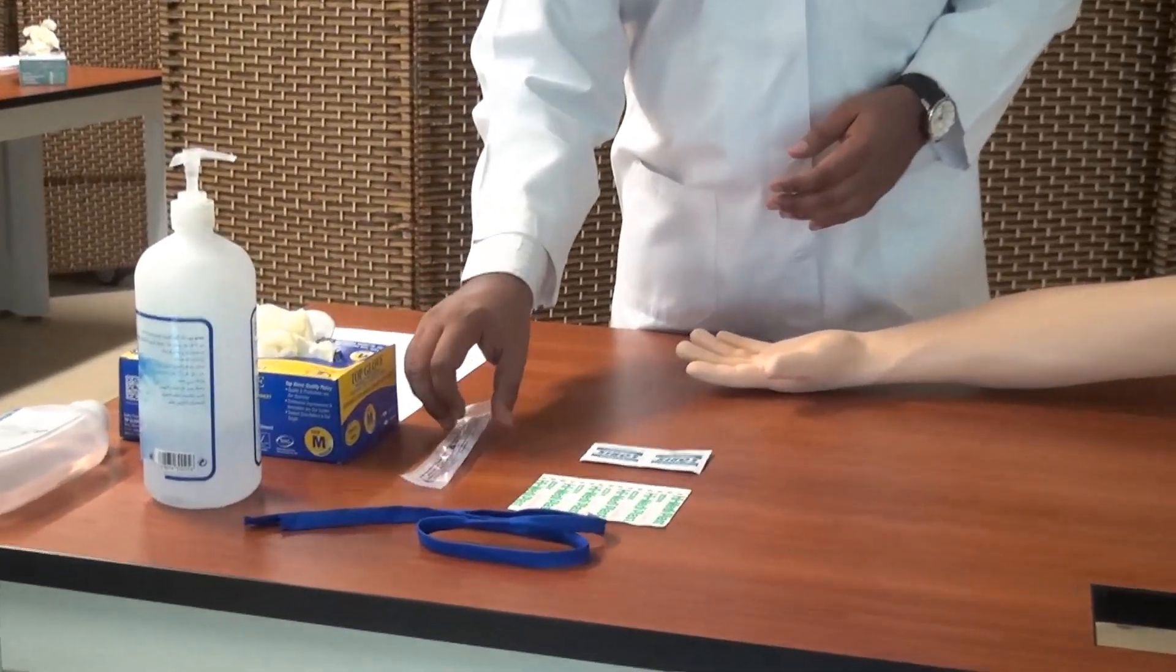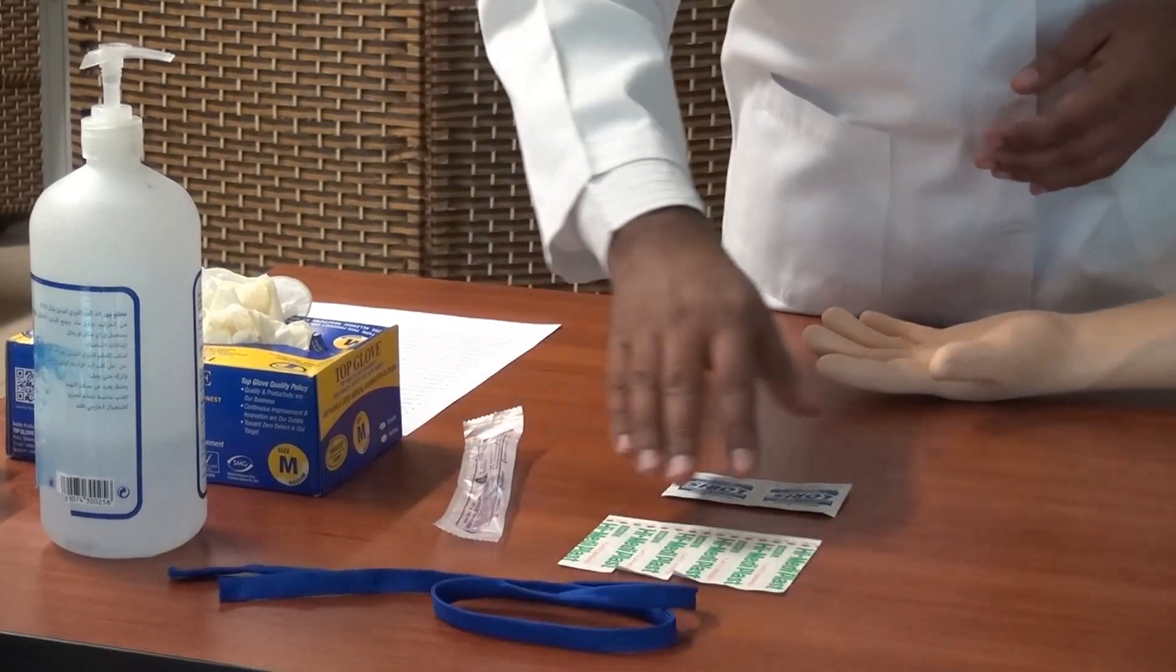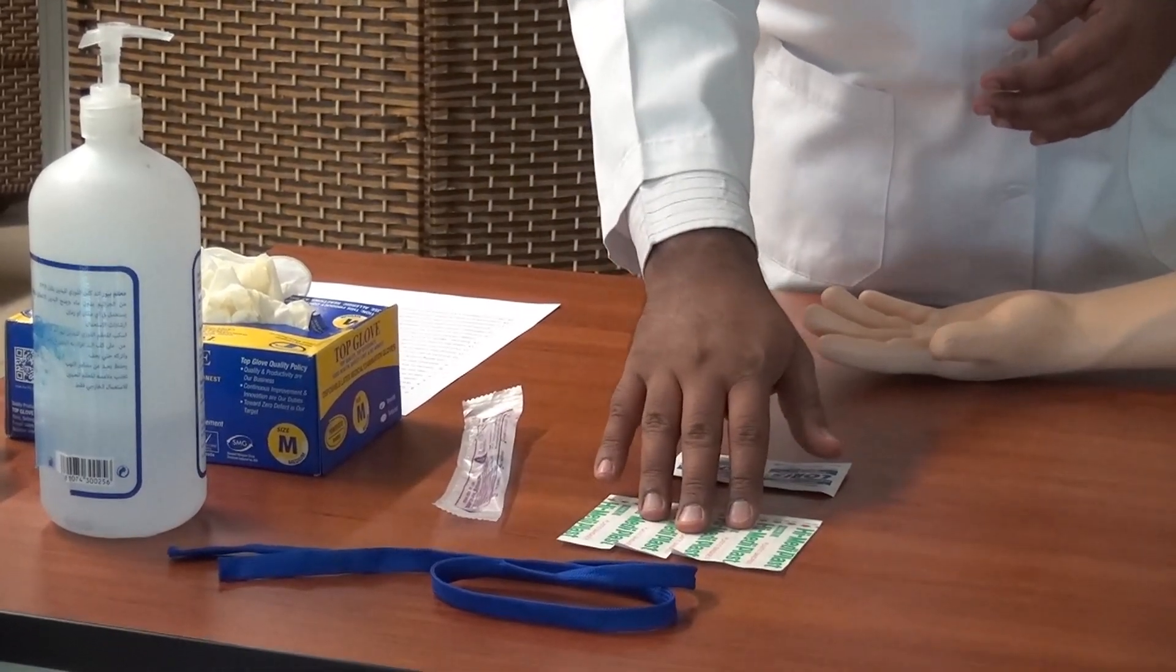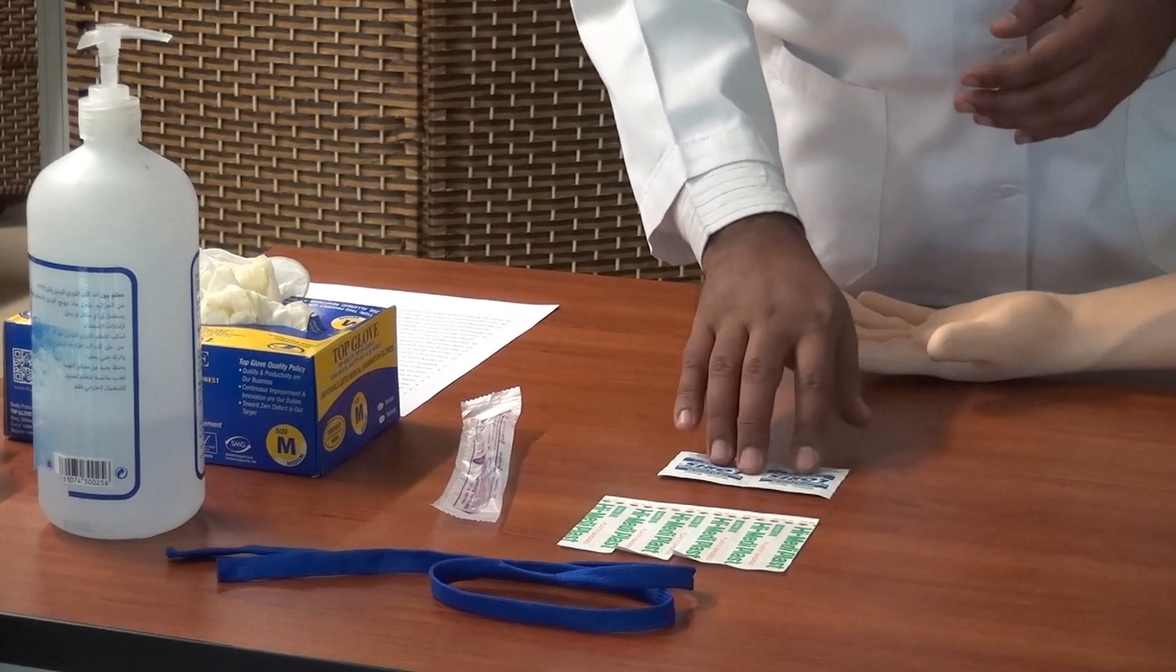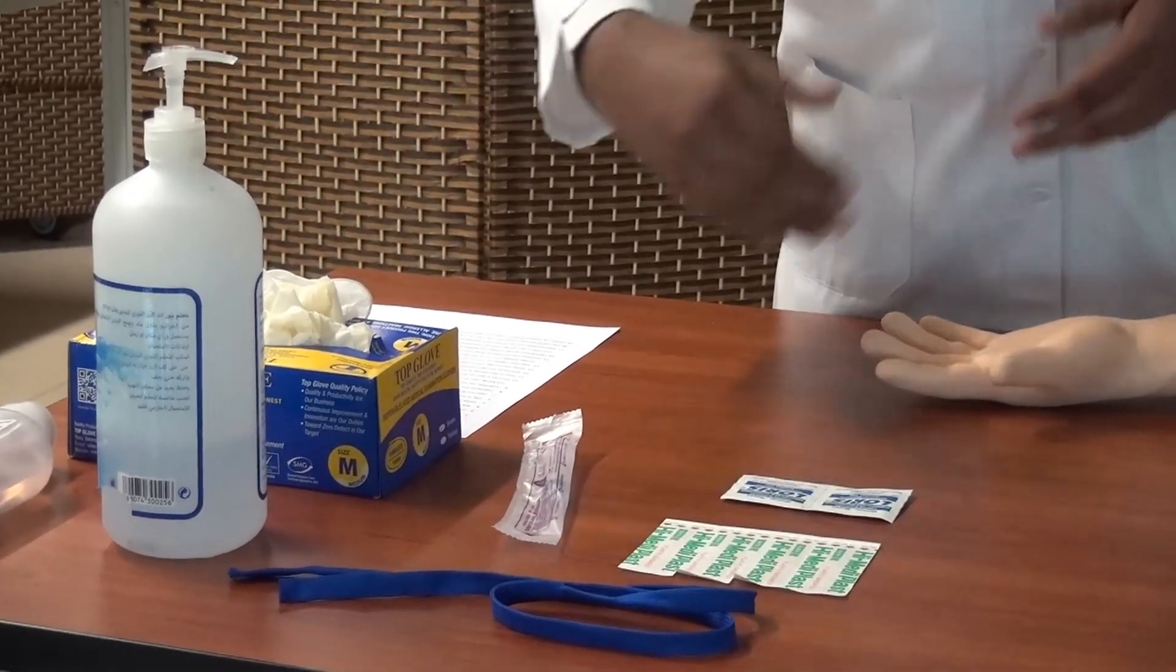This is the typical disposable syringe, the tourniquet, the bandage which you apply after the intravenous injection is over, alcohol swabs, gloves, and a sanitizer to clean your hands.